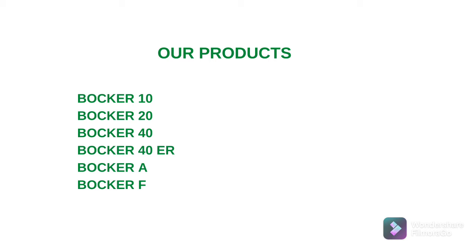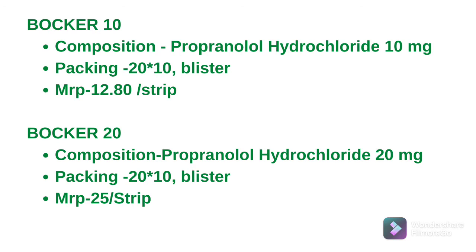Propanolol hydrochloride is an antihypertensive drug which is used in cardiovascular disorders. First we start with Boker 10 — its composition is propanolol hydrochloride 10 mg, packing is 20×10 blister, and MRP is 12.80 per strip. Next is Boker 20 — composition is propanolol hydrochloride 20 mg, packing is 20×10 blister, and MRP is 25 per strip.